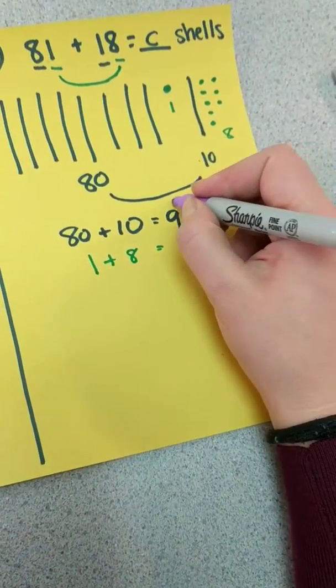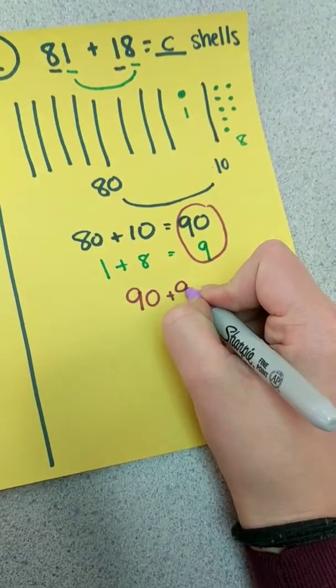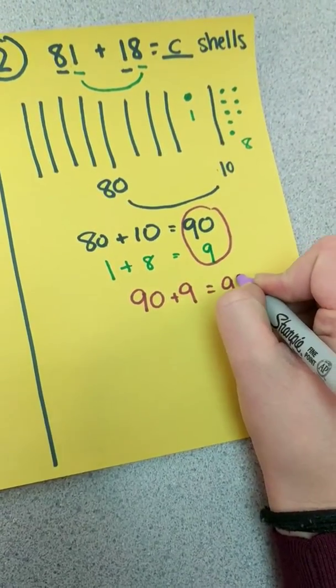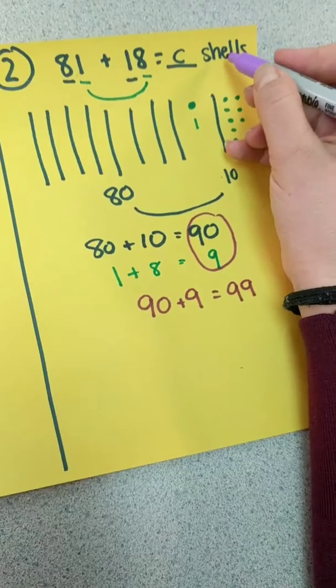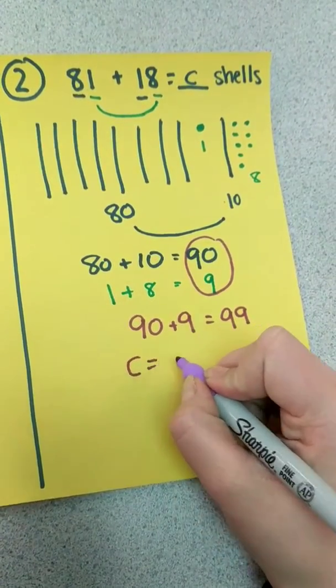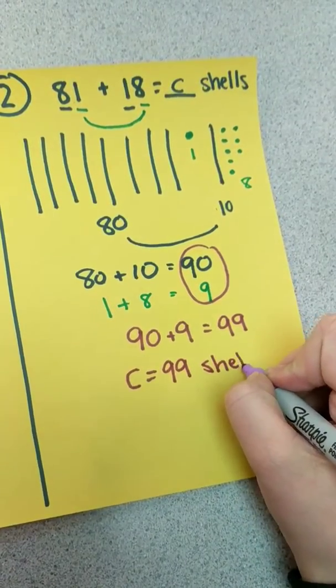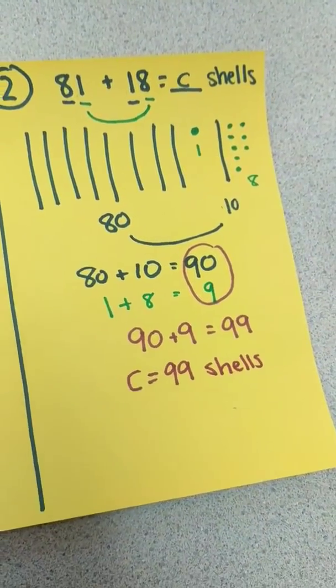Put them together. 90 plus nine equals 99. I have a C symbol and the label shells. So I have to write C equals 99 shells. Thanks for watching.